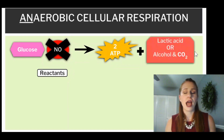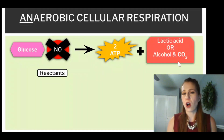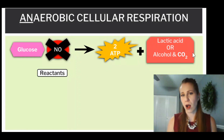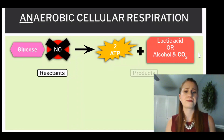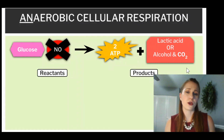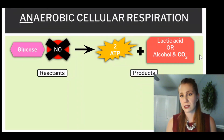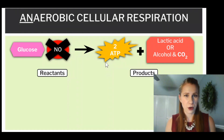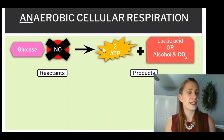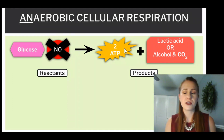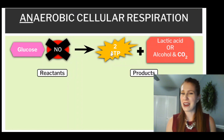Our byproducts are going to be lactic acid or alcohol and carbon dioxide — those are the products of this process. So again, it's crisis mode for your cells: producing a little bit of energy so that you can keep going, but it's not ideal.